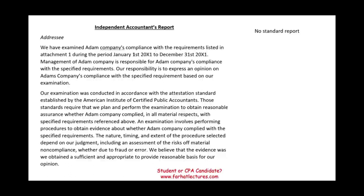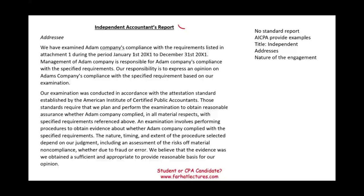Just like all the other attestation reports, there is no standard report. The AICPA provides examples, and what I did was take those examples and show you what a report typically would look like. First, we have to have the title, and the word 'independent' has to be there — we are providing assurance. Then we have to have an appropriate addressee. Regarding the nature of the engagement, here we are conducting an examination. We have examined Adam Company's compliance with requirements listed in Attachment 1, during the period January 1st to December 31st.